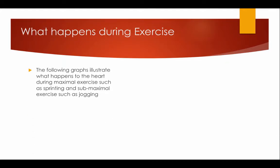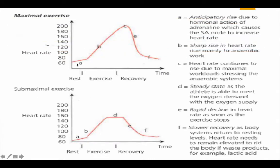The following graphs illustrate what happens to the heart during maximal exercise, such as sprinting, and sub-maximal exercise, such as jogging. There is an anticipated rise due to the hormonal action of adrenaline, which causes the SA node to increase heart rate. There is then a sharp rise due to mainly anaerobic work, continuing as maximum workloads stress the anaerobic system. There is then a rapid decline as exercise stops, with slower recovery as the body returns to resting levels — heart rate remains elevated to rid the body of waste products such as lactic acid.